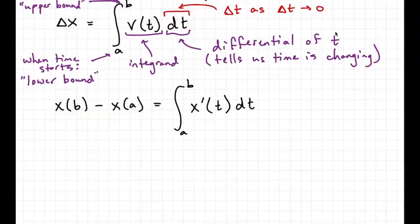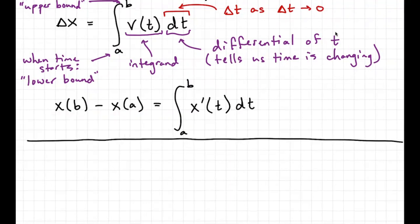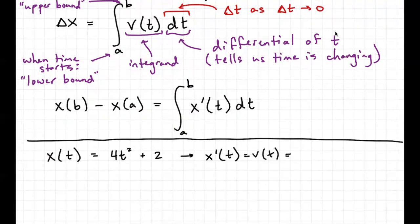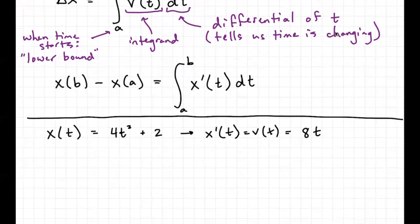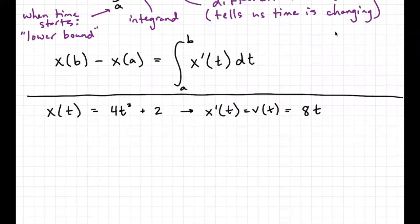Recall the problem from last time: if x(t) = 4t² + 2, then we found the derivative x prime of t, which is v(t), equals 8t. Here's how to use this for integration. Let's say I now have a velocity function v(t) = 8t — that's just a straight line on the velocity-time graph. I want to know the displacement over a certain time interval.